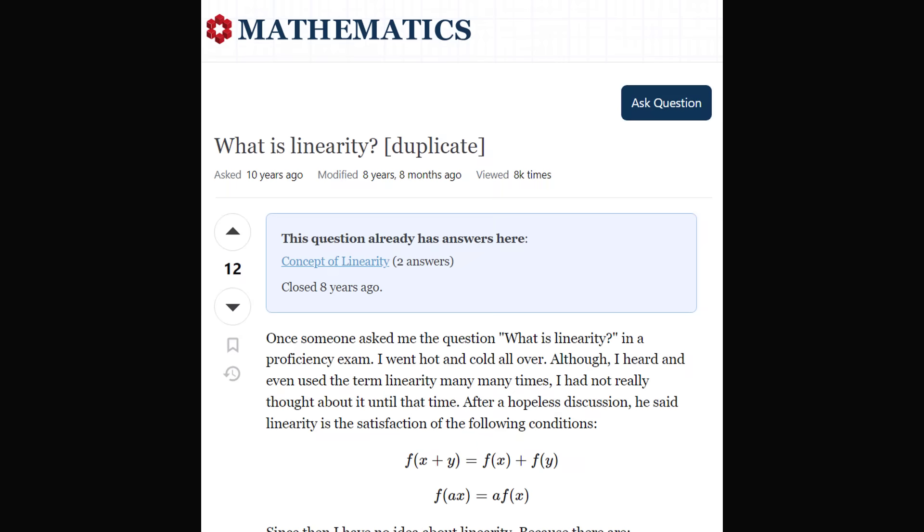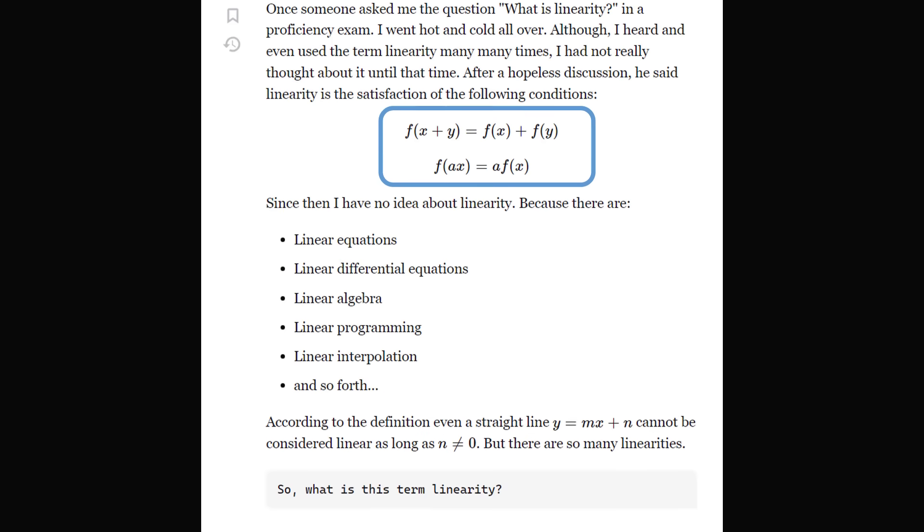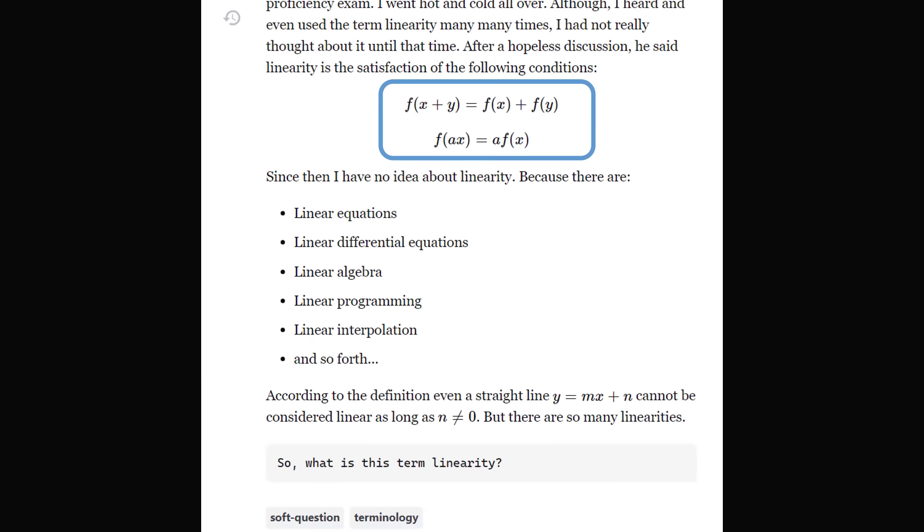Let me just give you an example of the type of ambiguity I would see. Here is a post on MathStackExchange, which is a community of mathematicians. Someone asked, what does linearity mean? Well, we are often taught the following definition of linearity. A function is linear if it obeys the following two conditions. If f of x plus y is equal to f of x plus f of y. And f of a multiplied by x is equal to a multiplied by f of x.